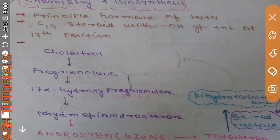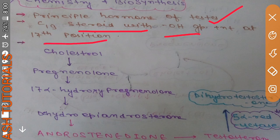We are going to discuss the chemistry and biosynthesis of testosterone. As a general introduction, testosterone is the principal hormone of the testis. It is a 19-carbon steroid ring with an OH group present at the 17th position.